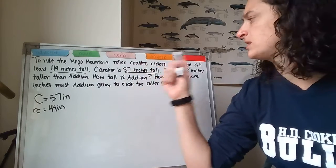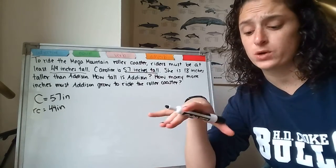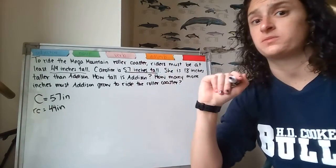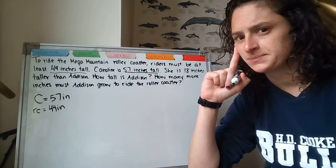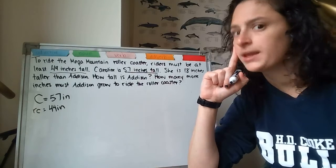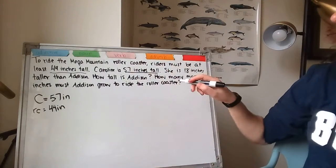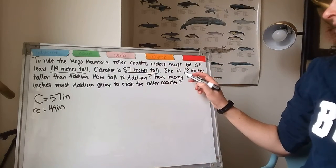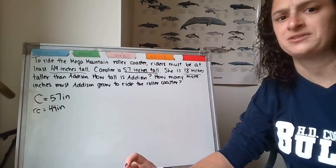If you need to be at least 44 inches tall, that means you need to be 44 inches or taller to ride the roller coaster. Can Caroline ride it if she's 57 inches? Is she taller than 44 inches? She is. She can ride the roller coaster. So, we also know that Caroline is 18 inches taller than Addison. How tall is Addison?